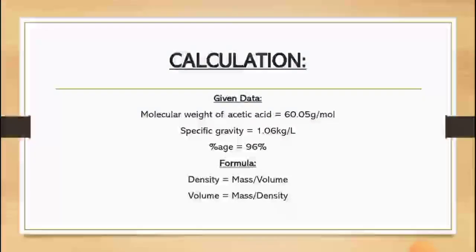The next point is the calculation. While we are doing the calculation of an experiment, first of all, we have to know about its given data. Here are the three data given: the molecular weight, specific gravity, and the percentage of purity. Its molecular weight is 60.05 g per mole. Its specific gravity, that is the density, is 1.06 kg per liter, and the percentage of purity is 96%.